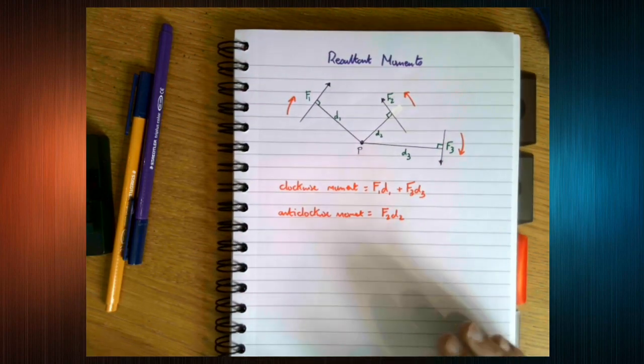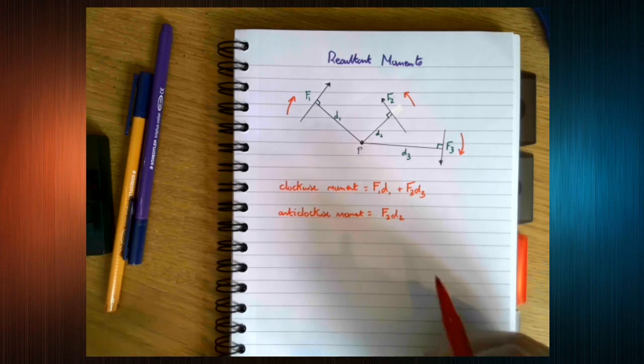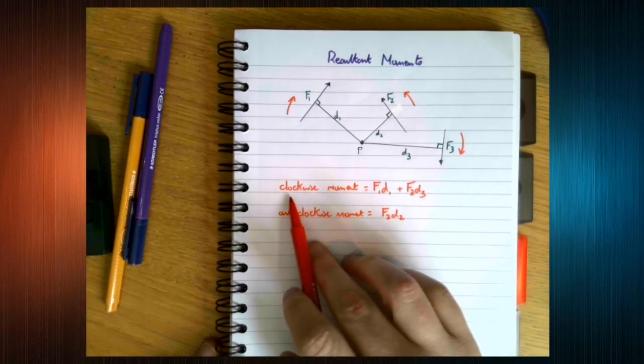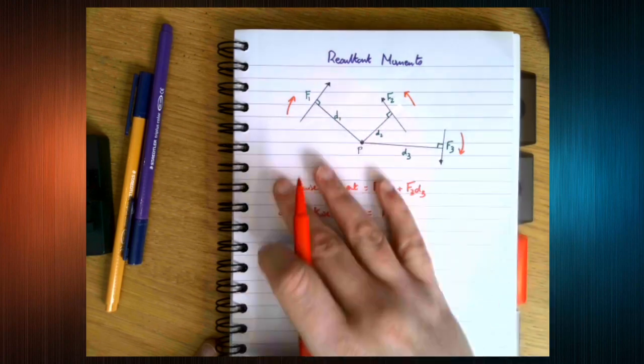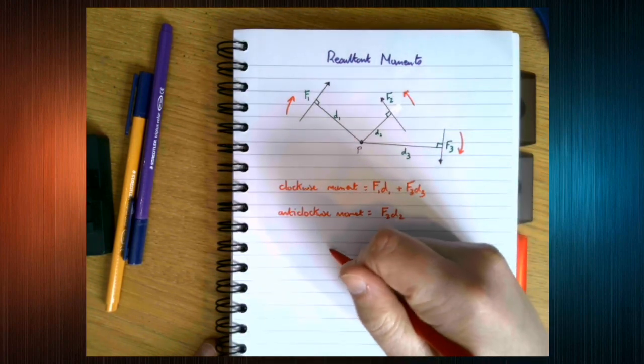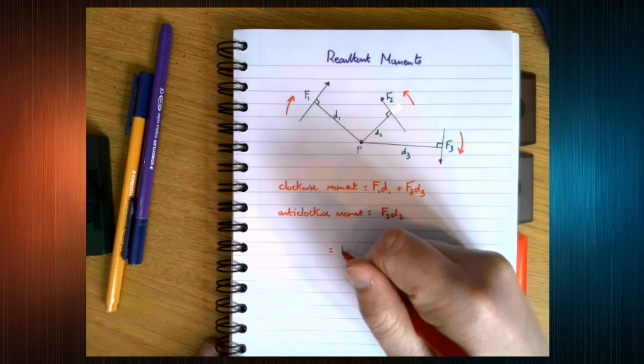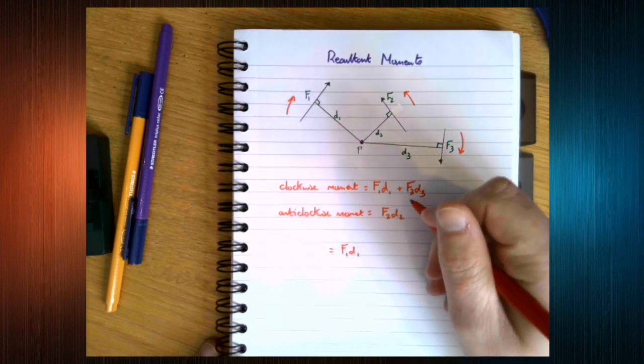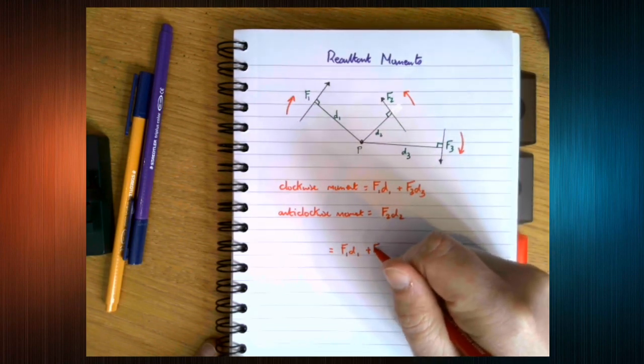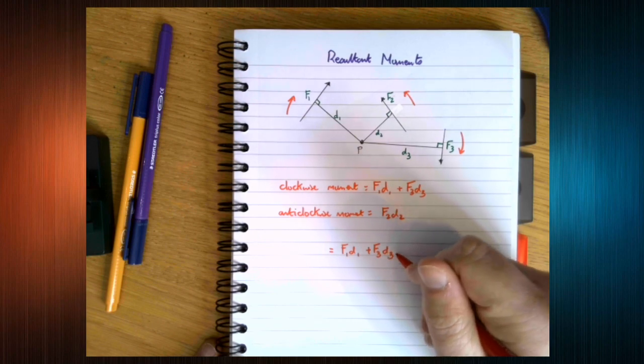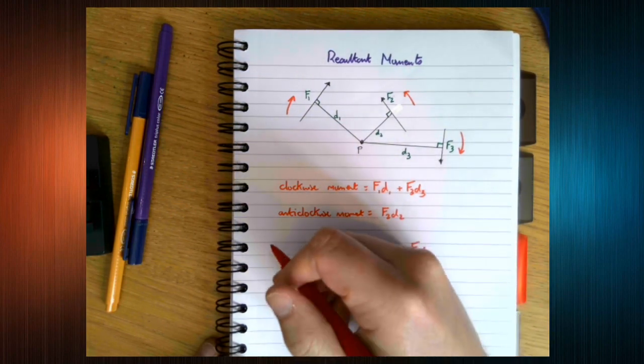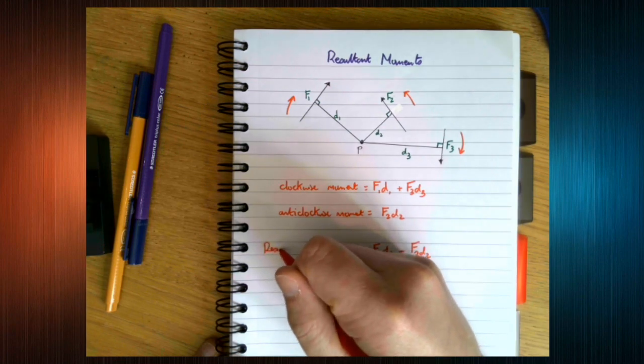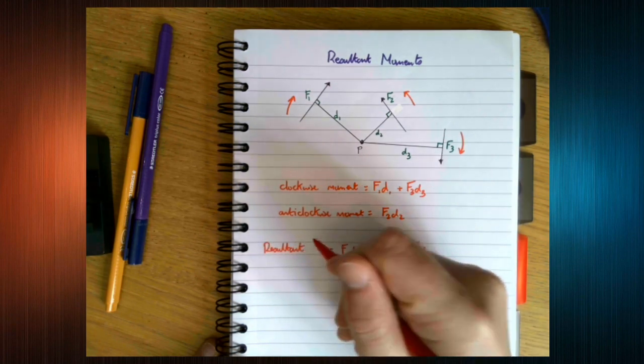So if we want the total moment, this is going in the opposite direction to these ones. So if we work out the total moments, we get F1 D1 plus F3 D3 minus F2 D2. So we call this the resultant moment.